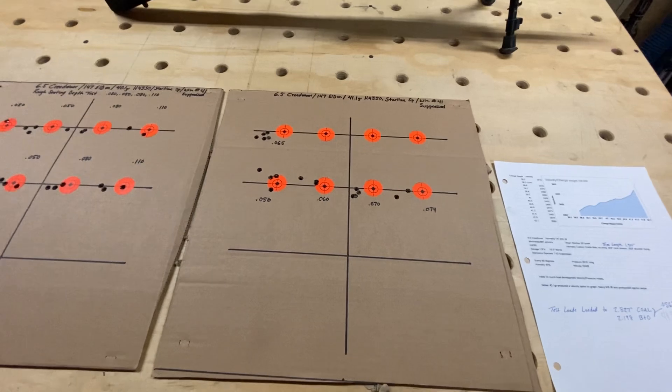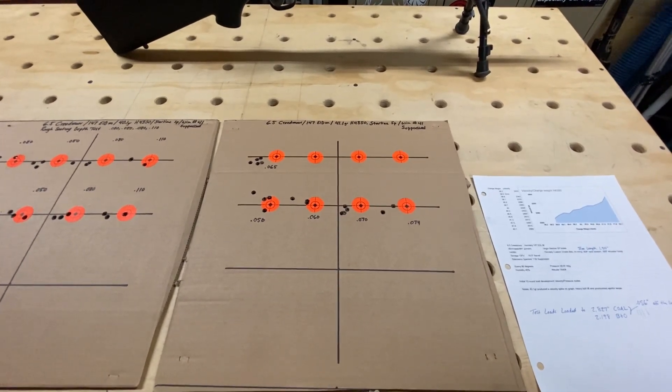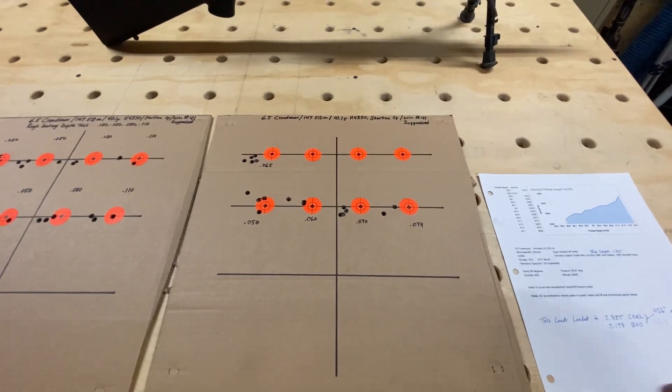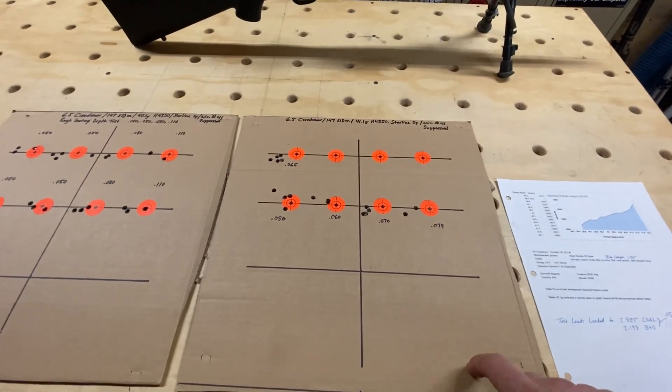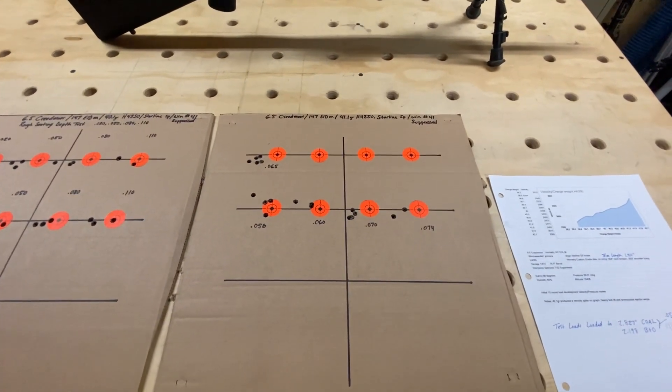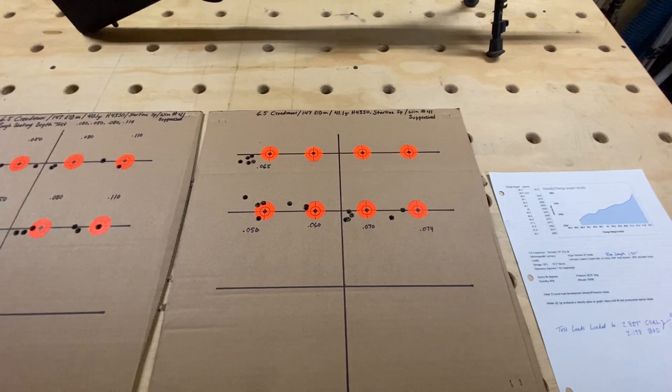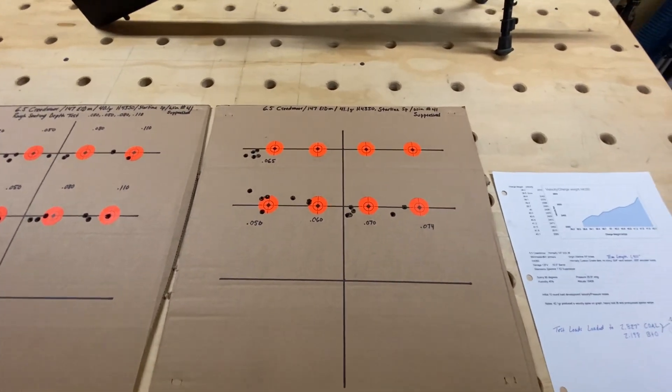It shoots the Hornady ELDX 143 grains at about an inch pretty consistently. So this was all using the suppressor. Next time I'll probably go out and try and verify these. It actually tends to shoot a little bit better without the suppressor. So I'm interested in seeing if these groups tighten up even more or they go the other direction.